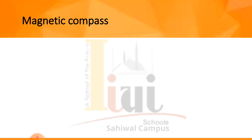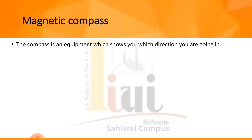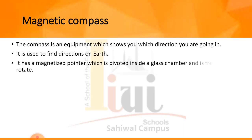A compass is an equipment which shows you which direction you are going in. It is used to find direction on the earth. If you keep it in your hand in a balanced position, you can tell the exact direction you are heading. It has a magnetized pointer.